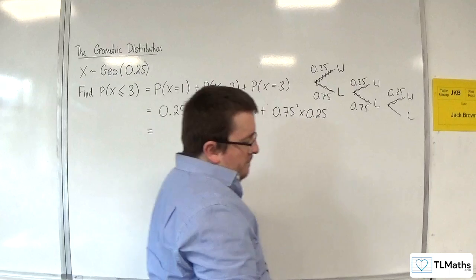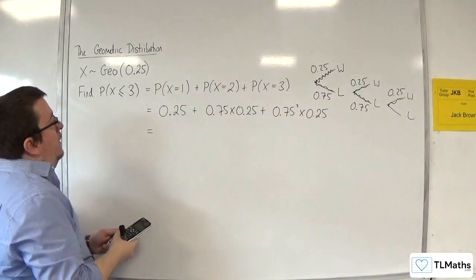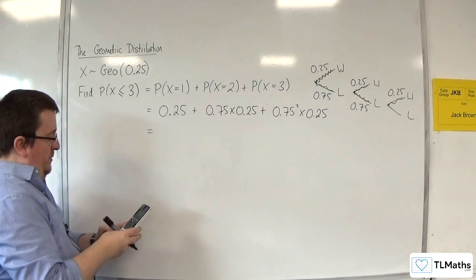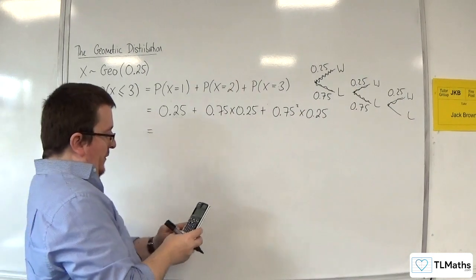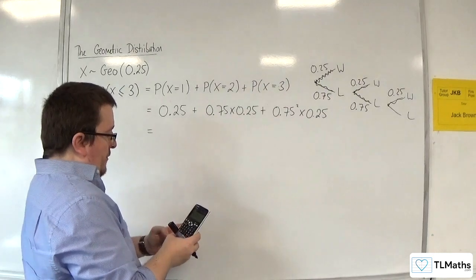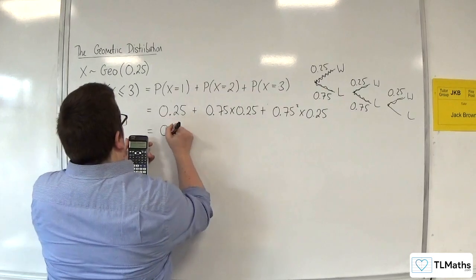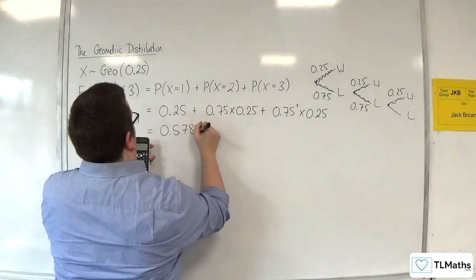So we have 0.25 plus 0.75 times 0.25 plus 0.75 squared times 0.25. And that gets me 37 over 64 or 0.578125.